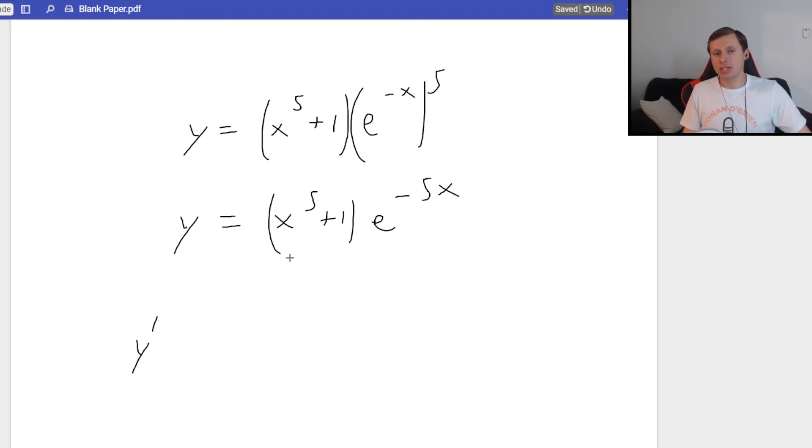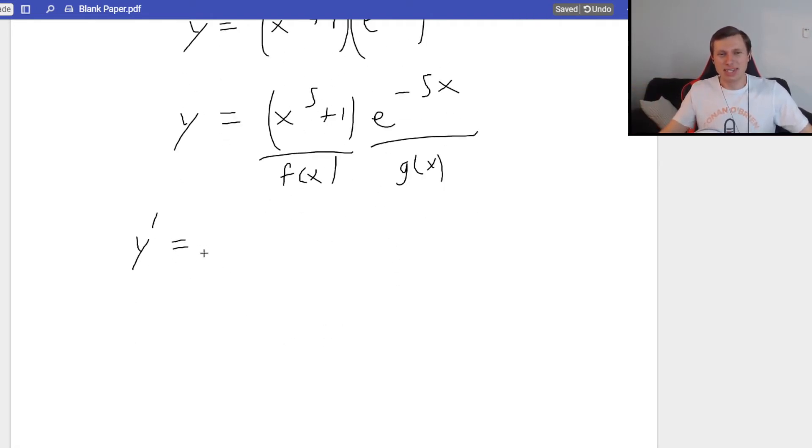Now let's take the derivative. Y prime. Notice this is going to be a product rule where this is f of x and this is g of x. So if you remember what product rule says, it's going to be f of x, which is x to the fifth plus 1, times g prime of x. What is the derivative of e to the negative 5x power?